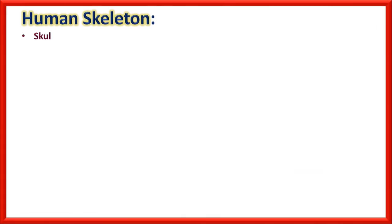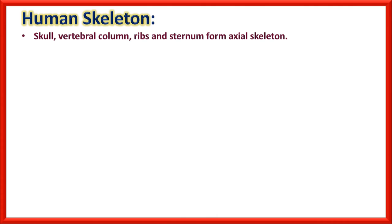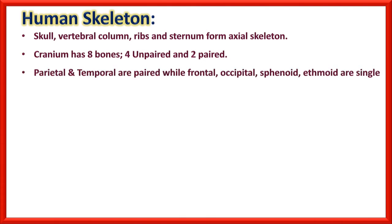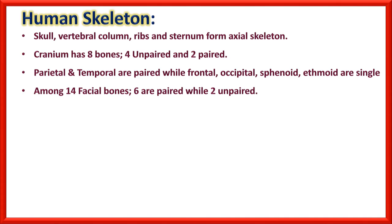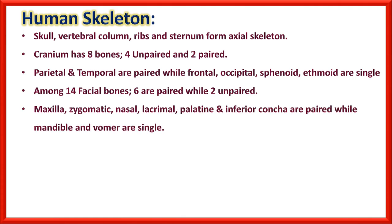Human skeleton: Skull, vertebral column, ribs, and sternum form the axial skeleton. The cranium has eight bones — four unpaired and two paired. Parietal and temporal bones are paired (two each), while frontal, occipital, sphenoid, and ethmoid are single bones. Among 14 facial bones, six are paired — maxilla, zygomatic, nasal, lacrimal, palatine, and inferior concha — while mandible and vomer are single bones.